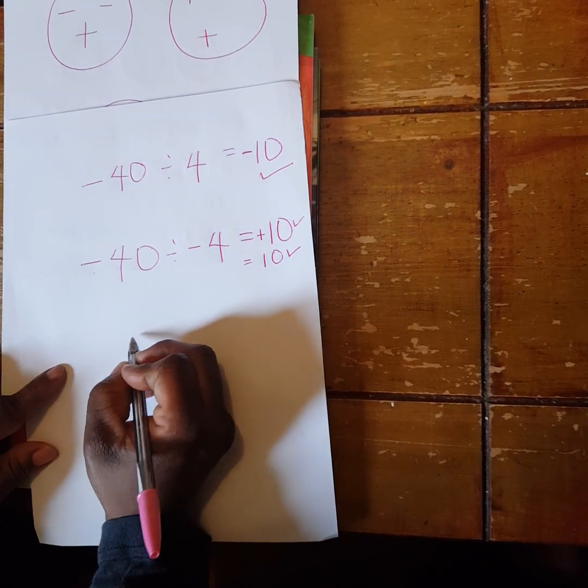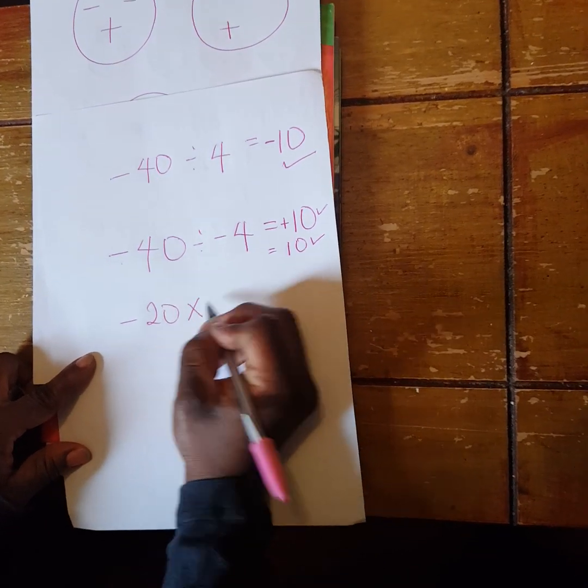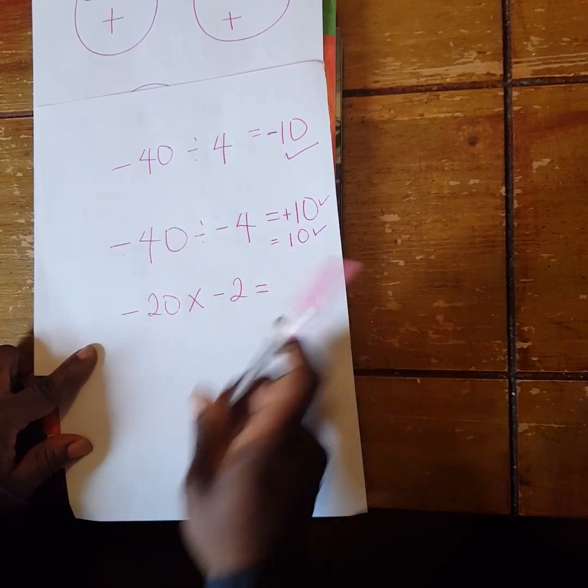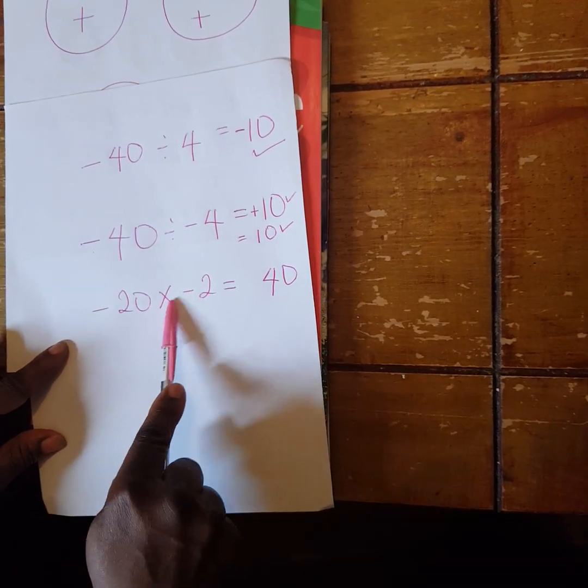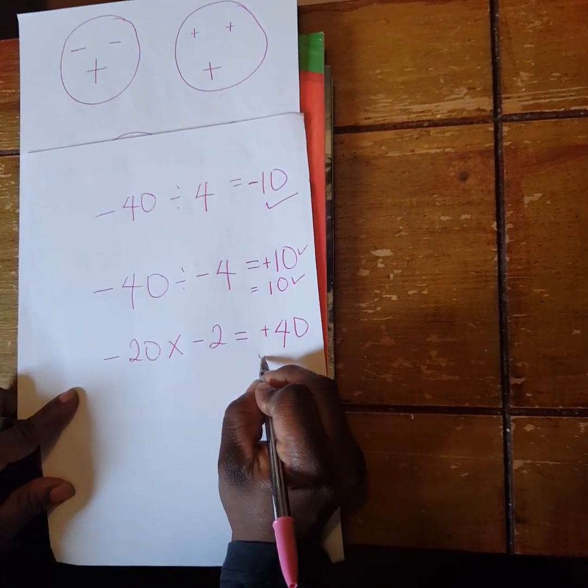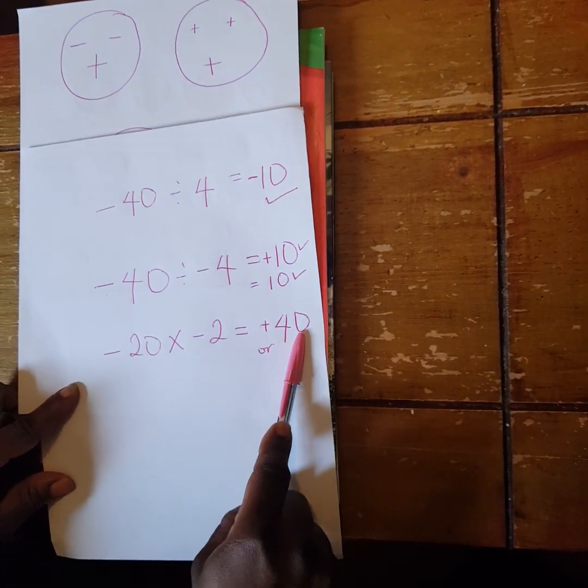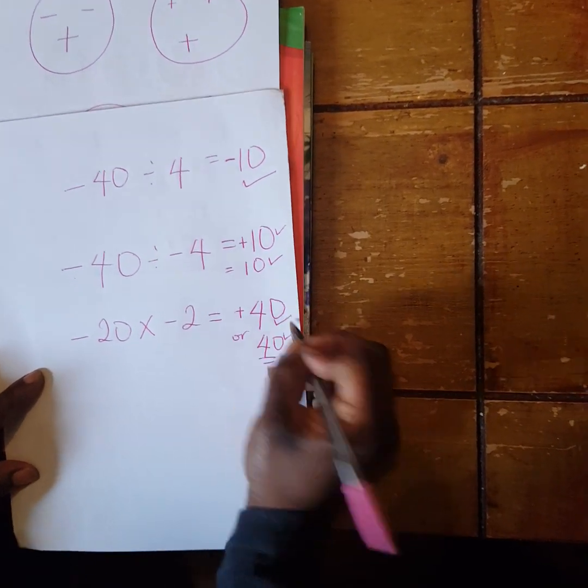However, if we were to do something like -20 times -2, now 20 times 2 is 40. A negative times a negative is positive, so when you have positive 40, it's the same thing as just 40. Both of them are correct.